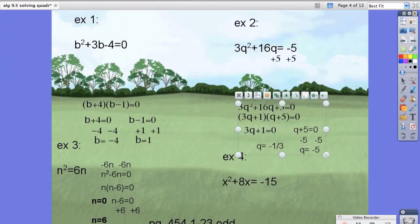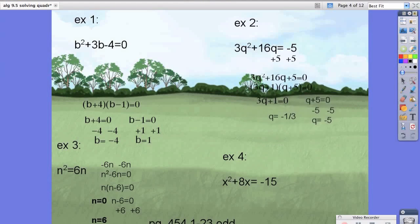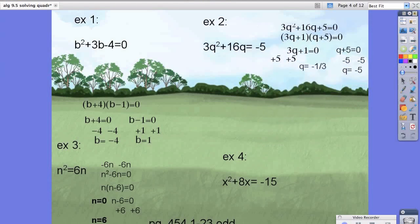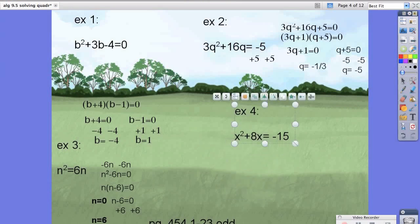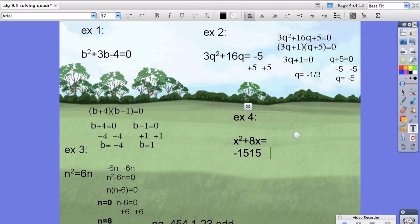Last, but most certainly not least, is example 4. Here we need to add 15 to both sides, and we're left with x squared plus 8x plus 15 equals zero. And when we factor this, we should get x plus 3 times the quantity x plus 5 equals zero.